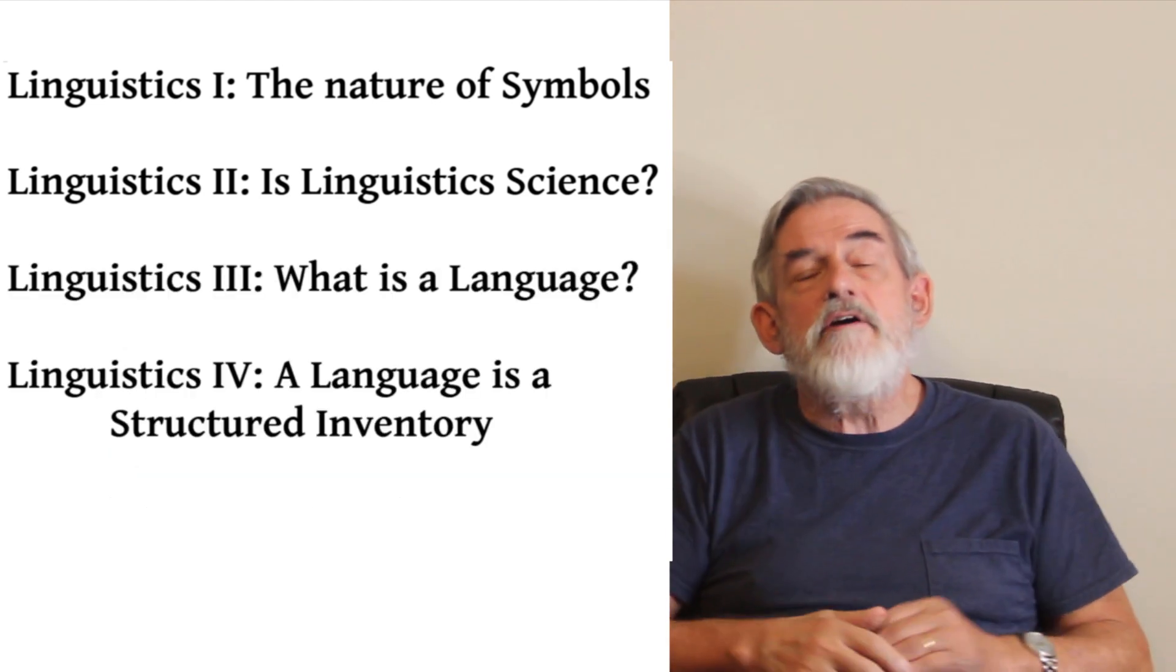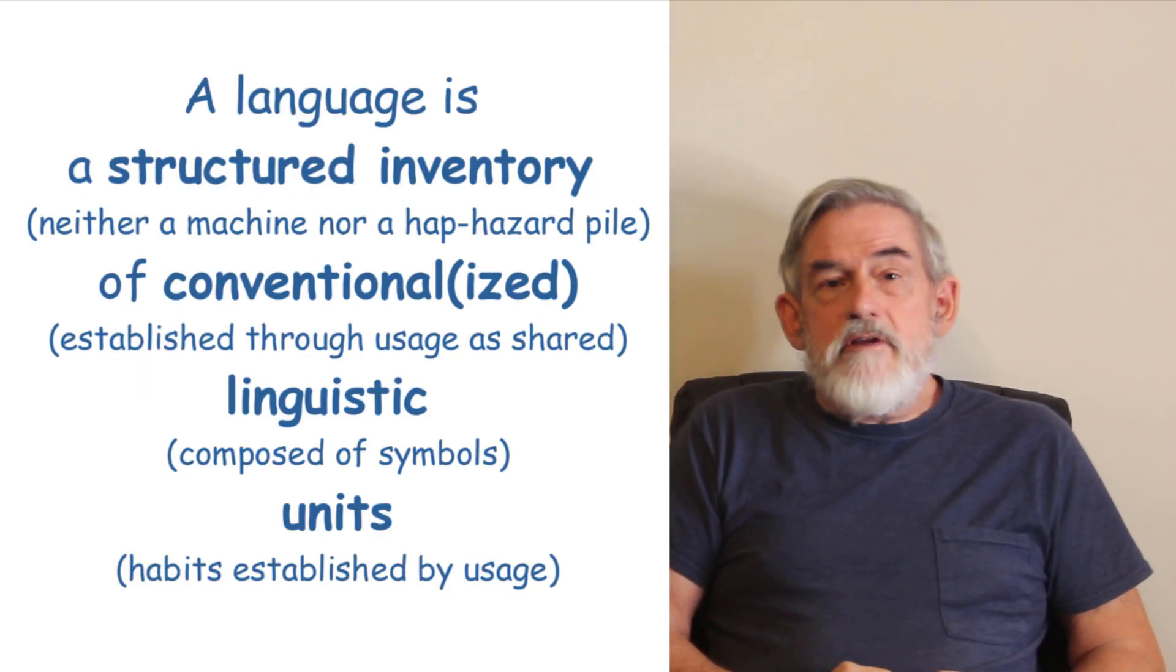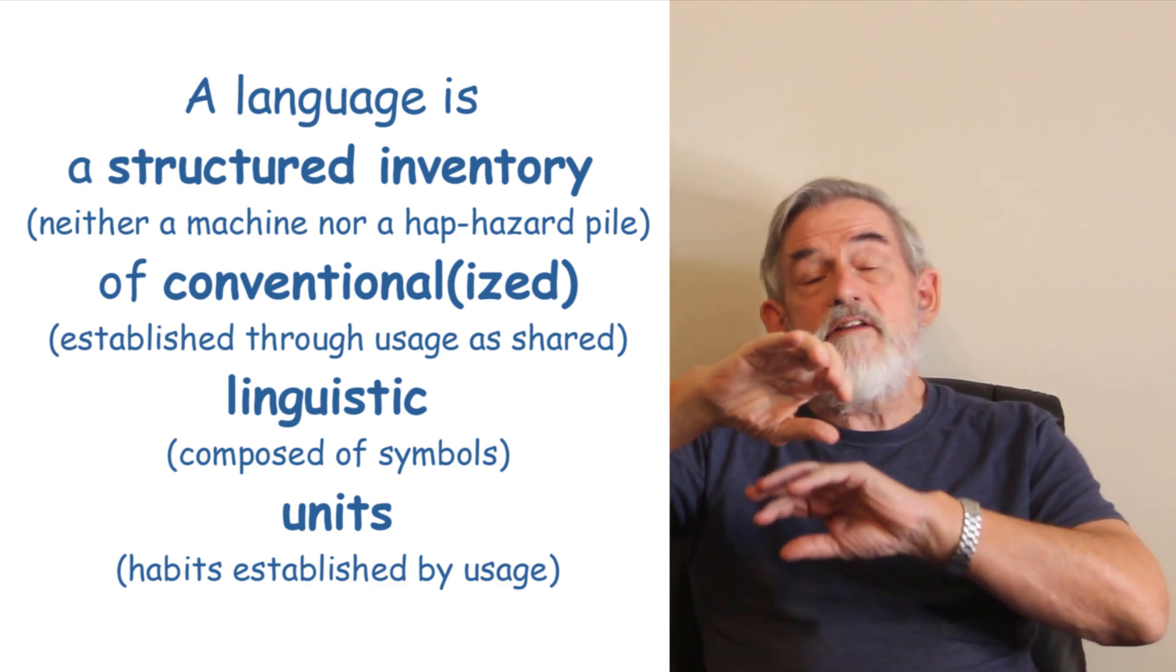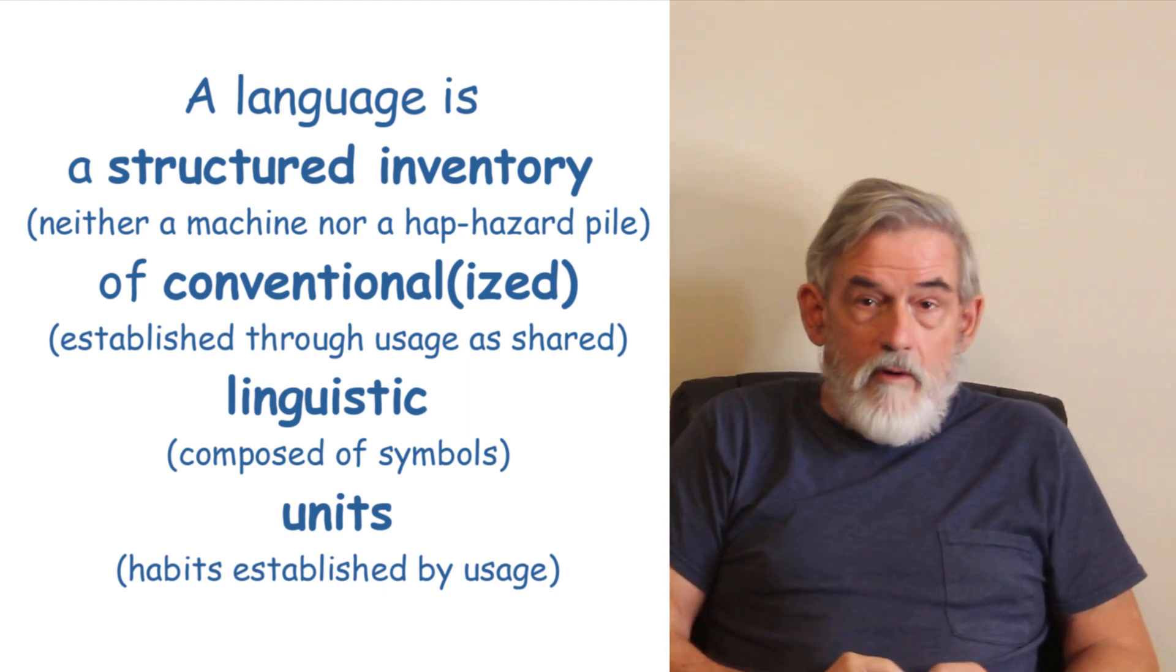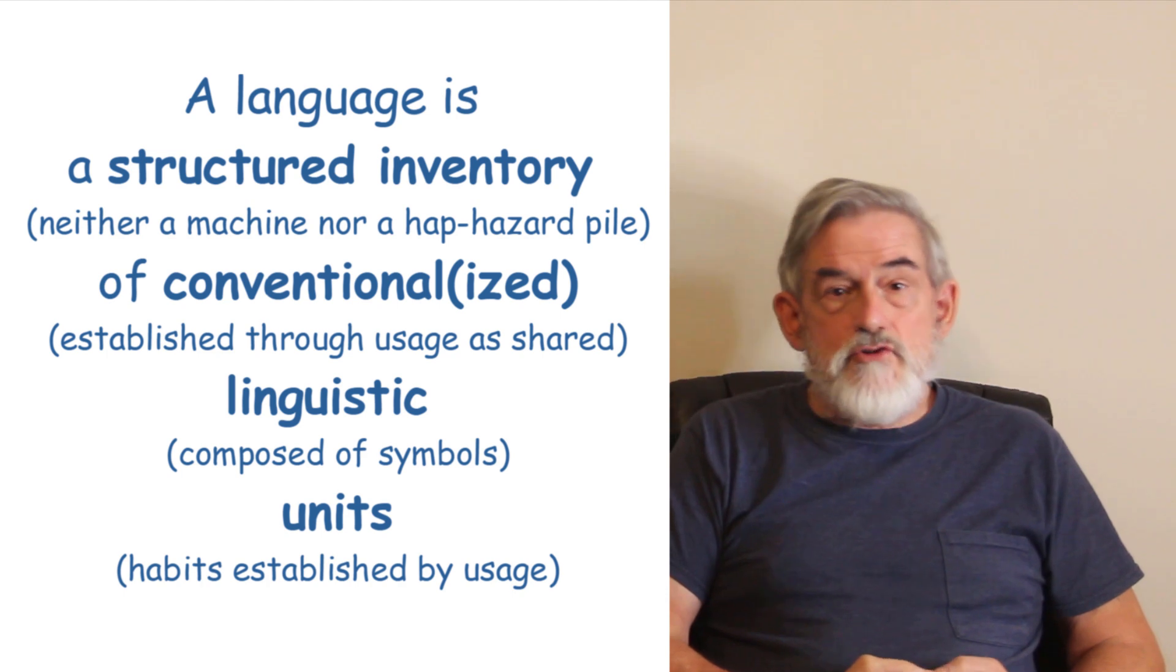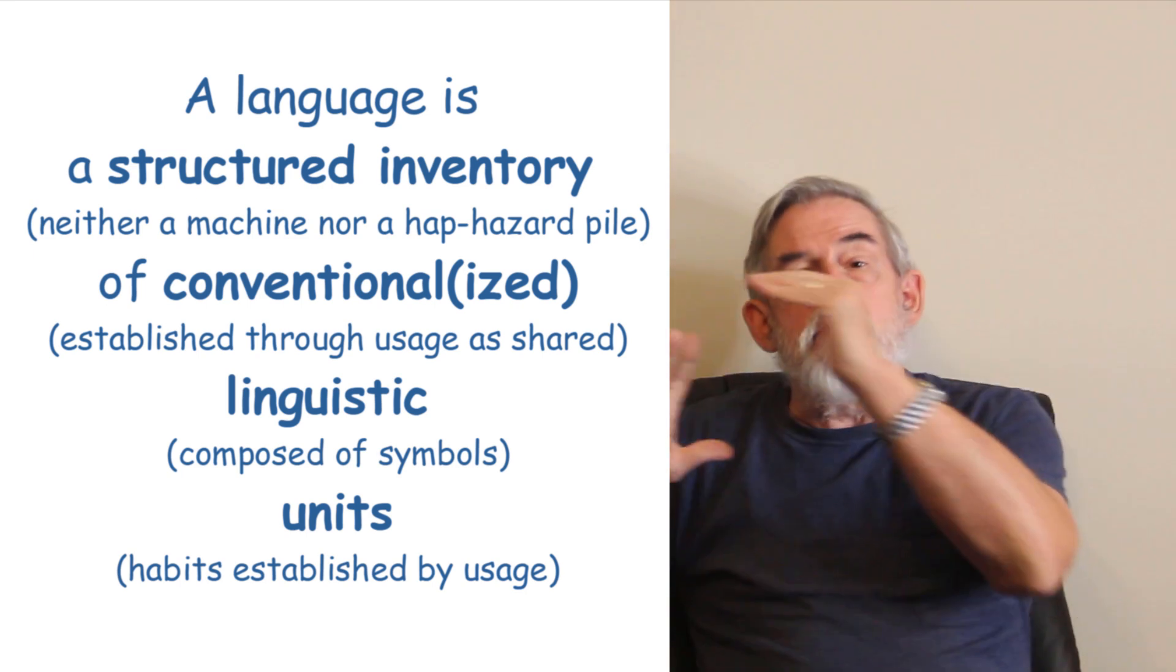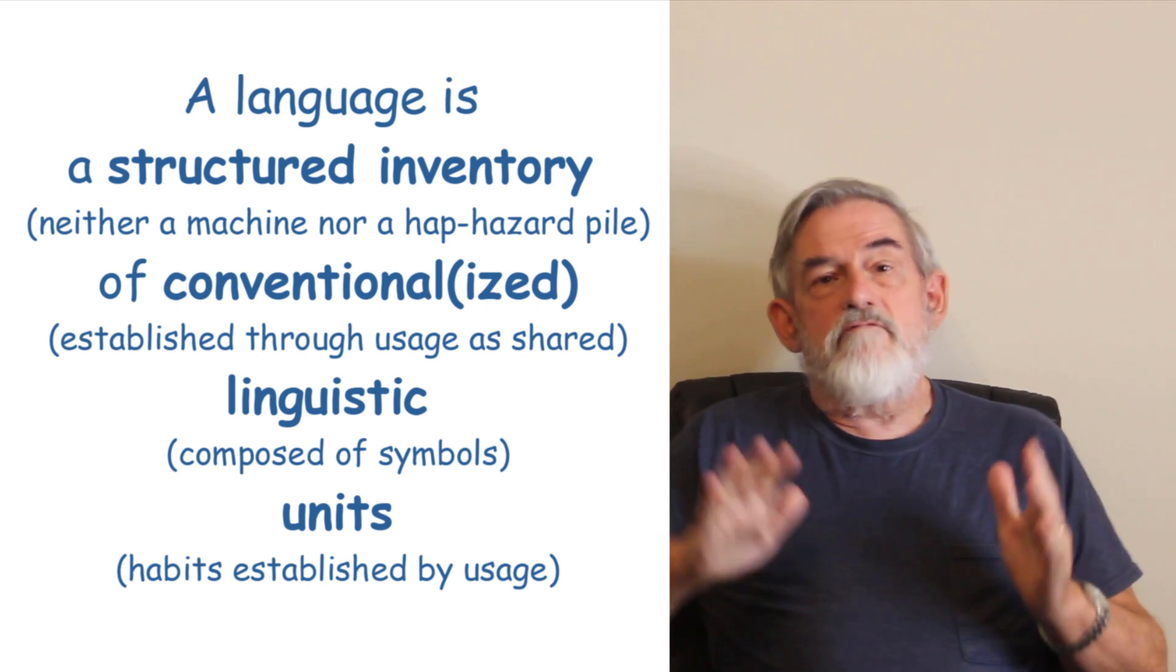The third and fourth videos together covered the topic of how you define a language. We used a definition that says that a language is a structured inventory of conventionalized linguistic units. Linguistic is defined to be symbolic, to have forms and meanings linked together. A structure is linguistic to the extent that it is a form that has a meaning or a meaning that is linked to a form or is a symbol composed of a meaning together with a form. A unit is a habit, an established habit in a person's mind. It's something the person has learned to do and has gotten in the habit of doing. A conventionalized unit is a unit that that person and others share.